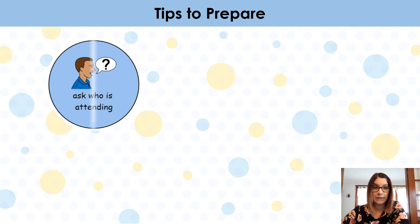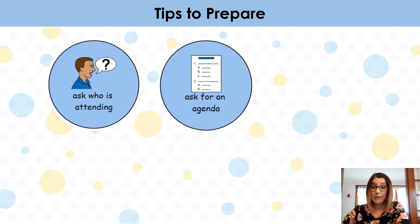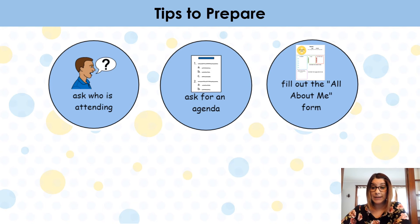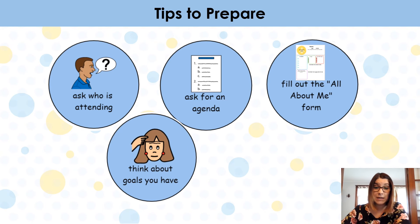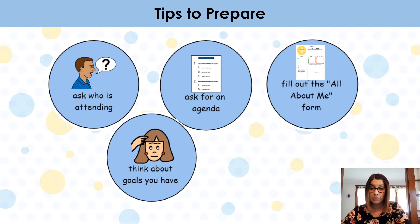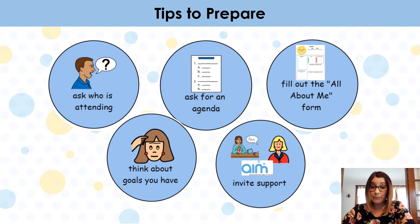Here are some tips to prepare for the meeting. You can ask whoever is organizing the meeting for a list of members who will be attending. You can ask for an agenda ahead of time so you know when it will be your turn to share information. You can fill out an 'all about me' form ahead of time — AIM has this form for you to use — or just brainstorm the key elements you want to share. Think about the goals you have: academic goals, communication or social goals. You can jot those down and bring them. And invite support — a friend, the AIM team, or Kinsman Children's Centre — just let the school know you are inviting them.